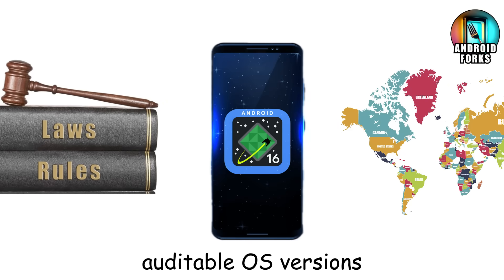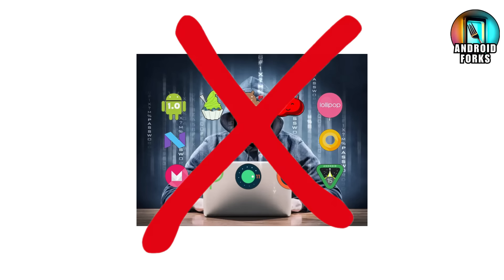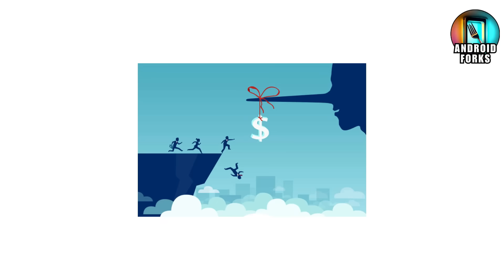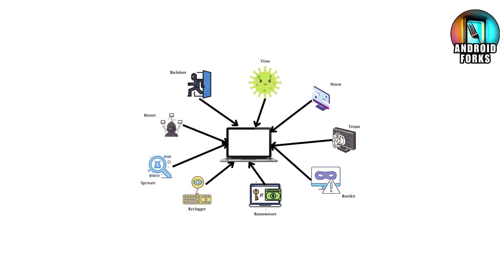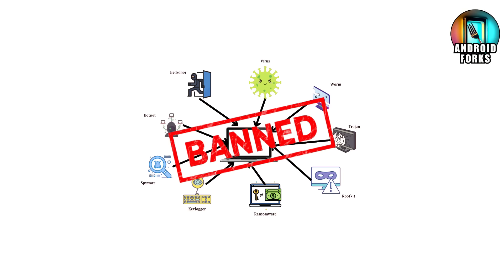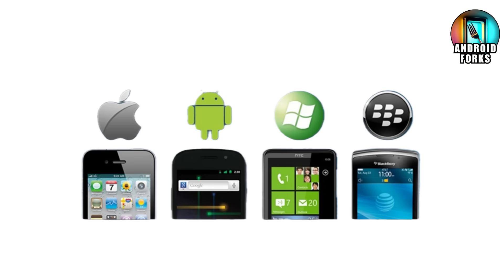The irony is that these forks weren't created by elite hackers. Many were simply rushed attempts by budget manufacturers trying to cut corners. But an OS that behaves like malware becomes indistinguishable from malware. So they were banned, quarantined, and replaced with trusted alternatives.